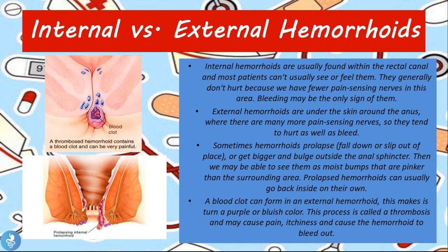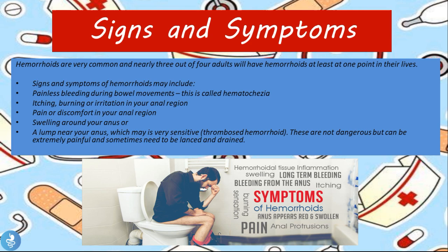A blood clot can form in the external hemorrhoid — as shown in the picture above. Because that vein has become so dilated and blood tends to stay there, it has a tendency to thrombose or clot, causing a lot of pain, itchiness, and significant bleeding. Hemorrhoids are very common, and nearly three out of every four adults will have hemorrhoids at least once in their lives.